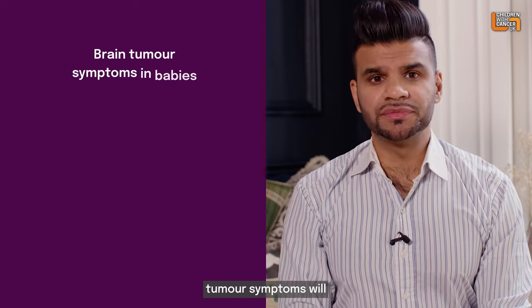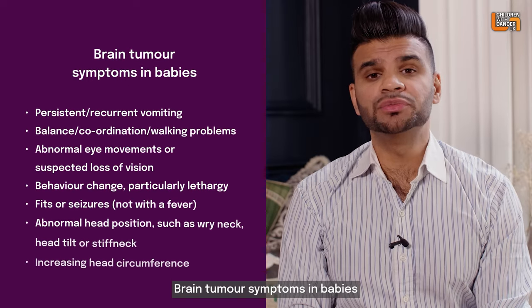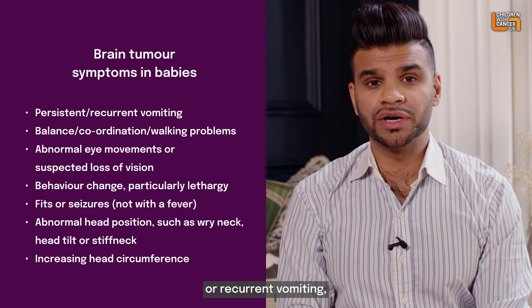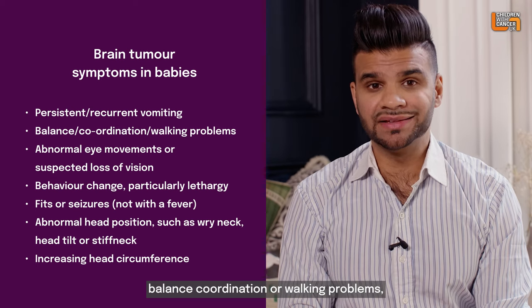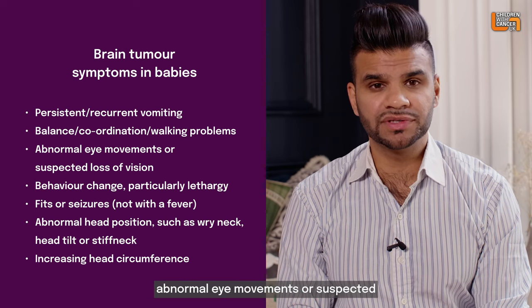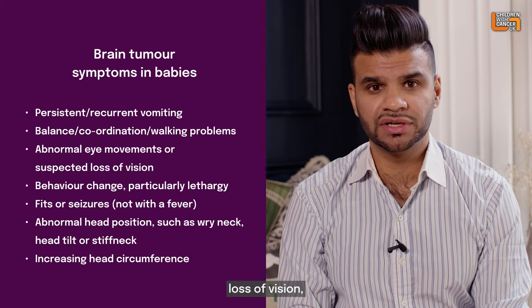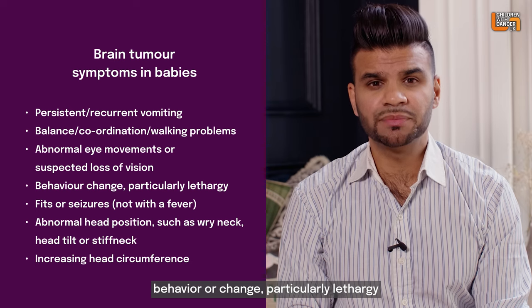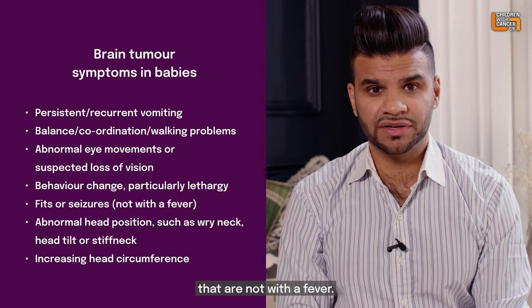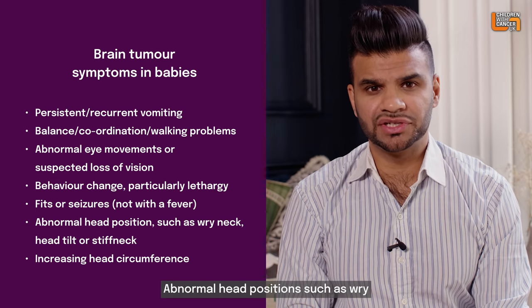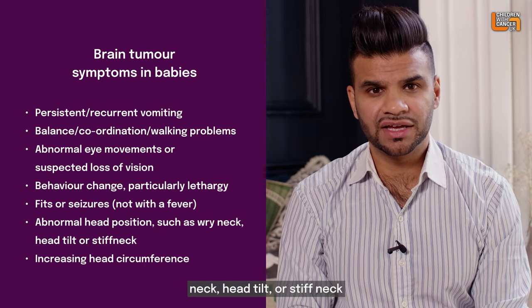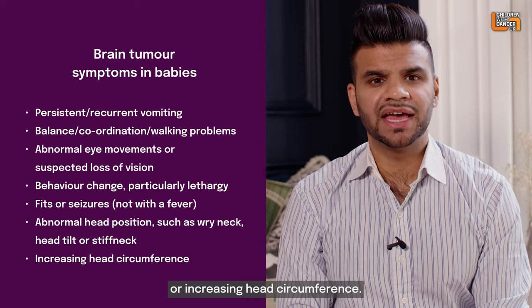Brain tumour symptoms will vary between age groups. Brain tumour symptoms in babies may include persistent or recurrent vomiting, balance, coordination or walking problems, abnormal eye movements or suspected loss of vision, behavioural change particularly lethargy, fits or seizures that are not with a fever, abnormal head position such as wry neck, head tilt or stiff neck, or increasing head circumference.